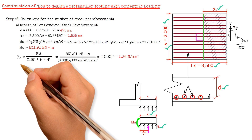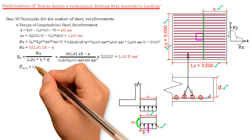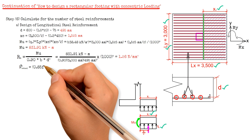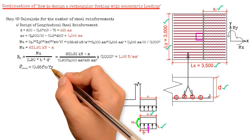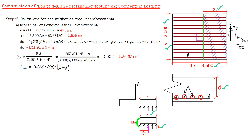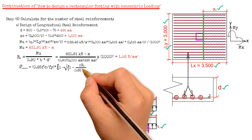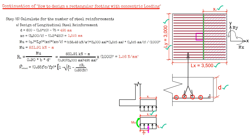After that, we can now solve for the actual steel ratio, which has a formula of 0.85 times FC prime over FY, times open bracket 1 minus square root of 1 minus 2 times R sub N, divided by 0.85 of FC prime, close parenthesis and close bracket. The result is 0.00313.